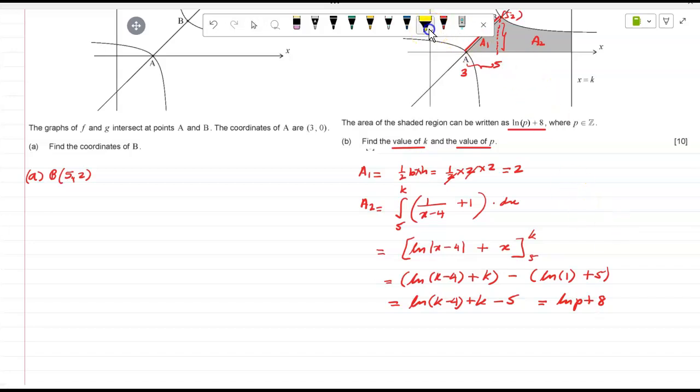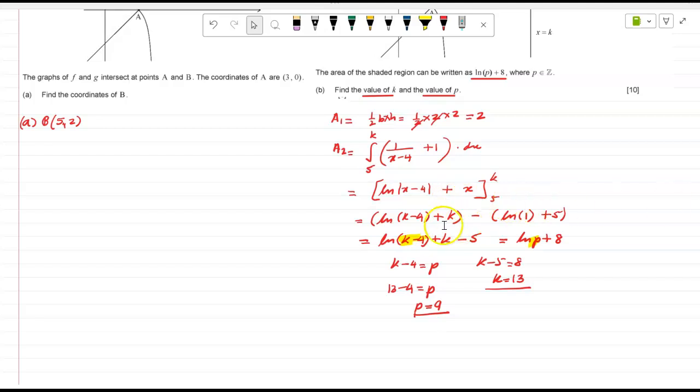Now this is equal to what? So now what can you do? K minus 4 is equal to p. K minus 4 is equal to p, correct. K minus 4 is equal to p and k minus 5 is equal to 8. So k is equal to 8 and 5 is k minus 13. So k minus 4 is equal to p, so p is equal to 9. Yeah, you are right. I missed this. So 2 plus, so the total area could be, so this is there. So the total area is 2 plus this, so you have to add 2. I missed that up. Plus 2.